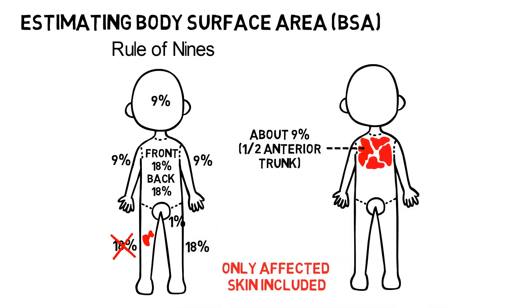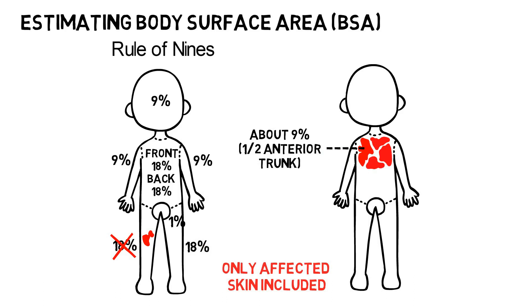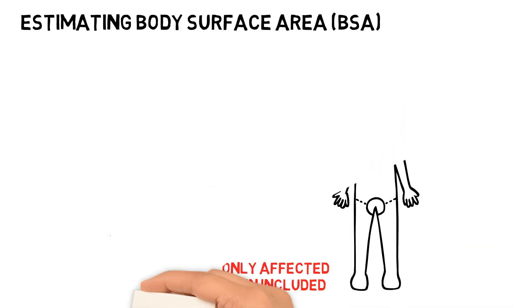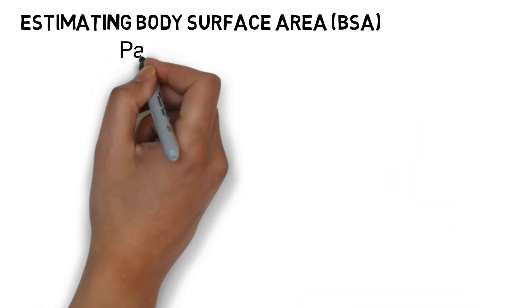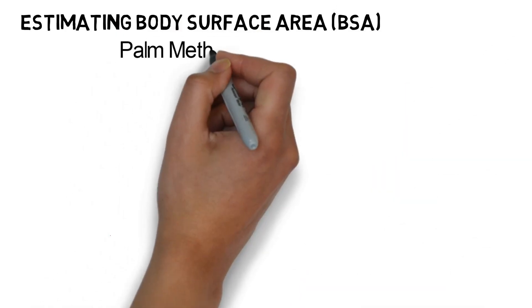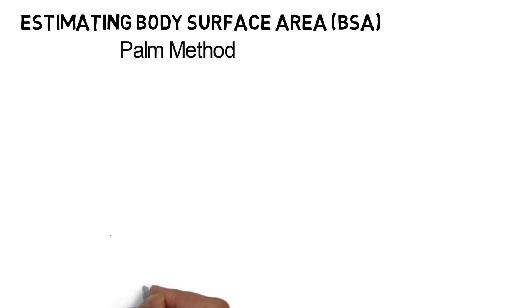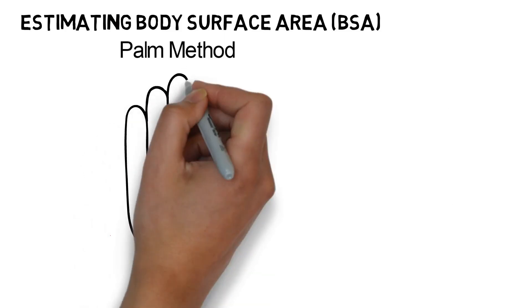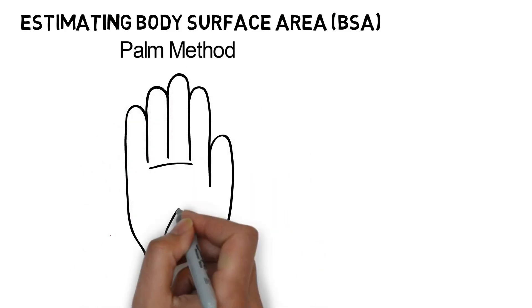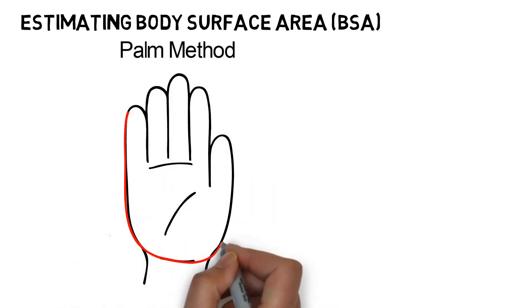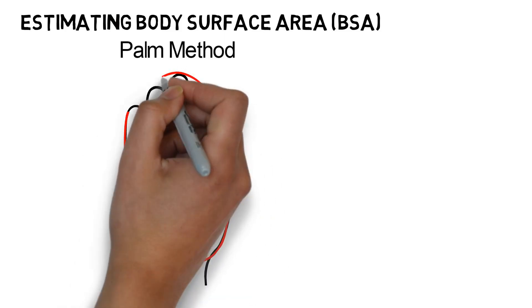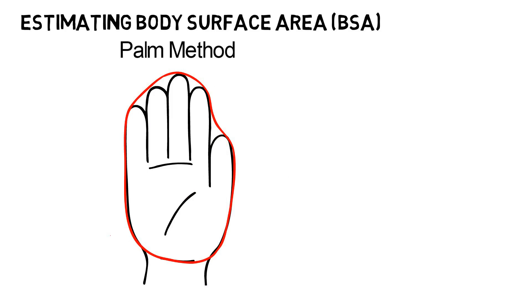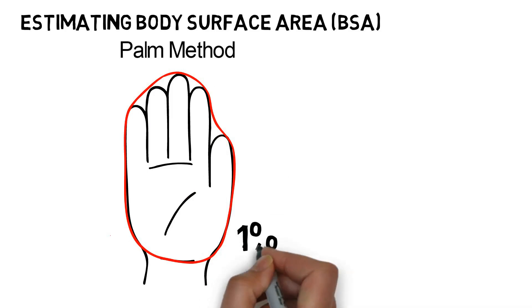For smaller scattered lesions, the palm method may be more useful. Using the palm method, the entire palmar surface of the child's hand, including fingers, is approximately 1% of TBSA. Knowing how to estimate the BSA will help us determine the grade of the reaction.